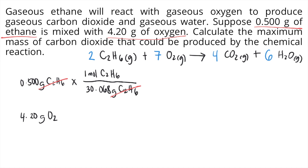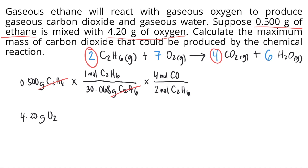In the problem, we are asked about carbon dioxide, so look at the balanced chemical equation. What is the ratio between C2H6 and carbon dioxide? As you can see, there are two C2H6 and four carbon dioxide. So you put that into your solution: two moles of C2H6 produces four moles of carbon dioxide. The moles of C2H6 cancel, and now you have moles of carbon dioxide.